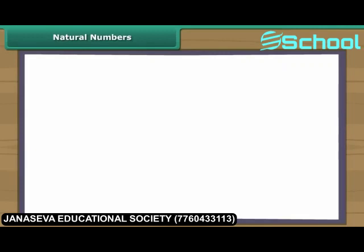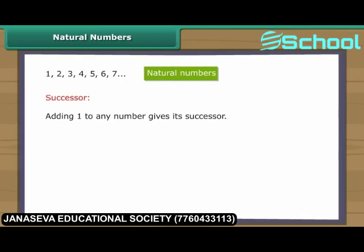Natural numbers: We use one, two, three, four to count the objects. Counting numbers are also known as natural numbers. Adding one to any number gives its successor. For example, one added to twenty gives twenty-one, which is the successor of twenty.